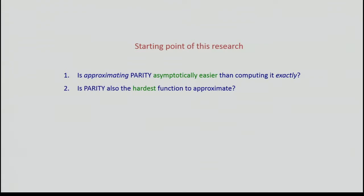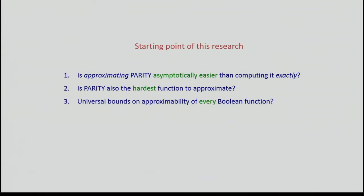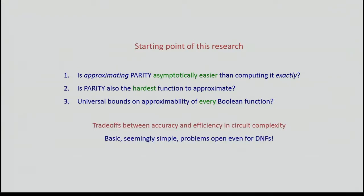The second question is more global: we saw that parity is the hardest function to compute exactly — is it also the hardest function to approximate? To answer that, we also need to consider the third question: universal bounds on approximating every boolean function. Statements of the sort: every boolean function can be 0.1-approximated by a DNF of size such-and-such. These are the three questions we make progress on in this research. The theme is trade-offs between accuracy and efficiency in circuit complexity.